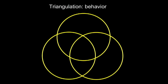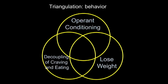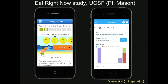Another example of triangulation with behavior: looking at reproducibility and spreading these types of effects not just with one behavior but others as well. If we look at the theory-mechanism-behavior framework around eating — can we decouple craving and eating behavior where people are stress or emotionally eating, and can we use mindfulness training to see a reduction in craving-induced eating as well as weight loss? This study is led by Ashley Mason at UCSF; the app is called Eat Right Now. We have preliminary data showing decoupling of craving and eating behavior, and as a secondary outcome, a modest but significant weight loss.